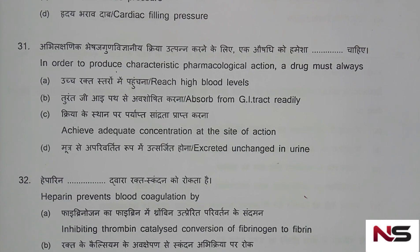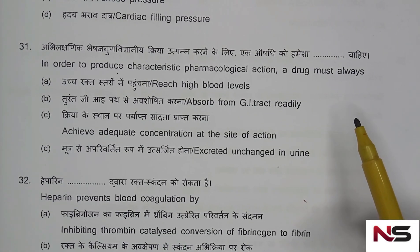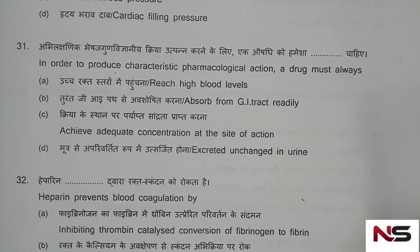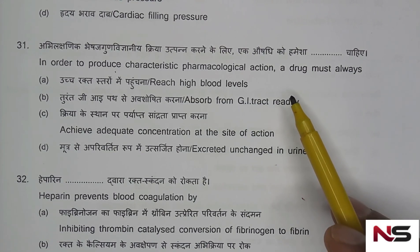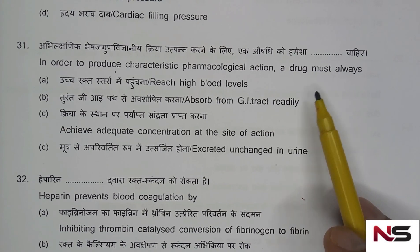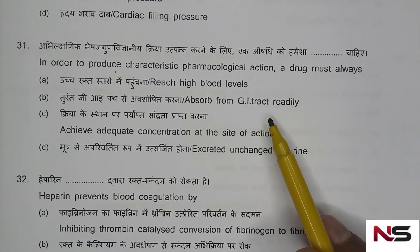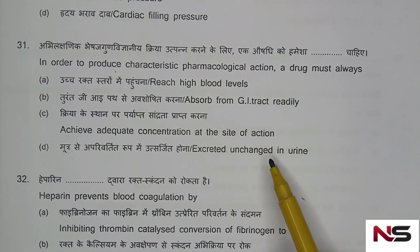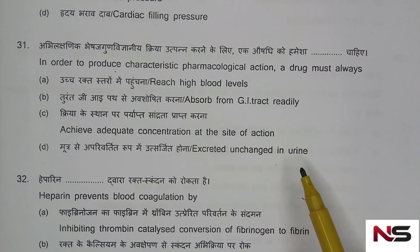Question 31: In order to produce characteristic pharmacological action, a drug must always — option A: reach high blood level, option B: be absorbed from GI tract readily, option C: achieve adequate concentration at the site of action, option D: be excreted unchanged in urine.